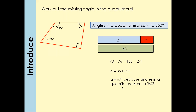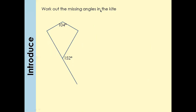Remember to always write a statement with your answer, because there is one mark for stating that the angles in a quadrilateral add up to 360°. Now let's look at the next question — we have a kite and we want to find all the missing angles.